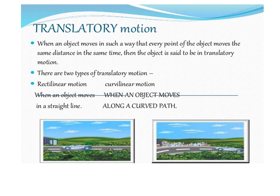As you see in the pictures, a car moving along a straight road is an example of rectilinear motion. And if the car is moving along a curved road, that is around a turn, then it is curvilinear motion.